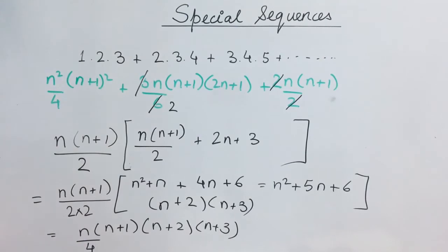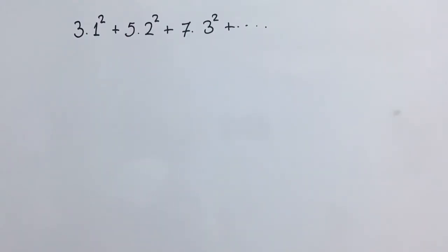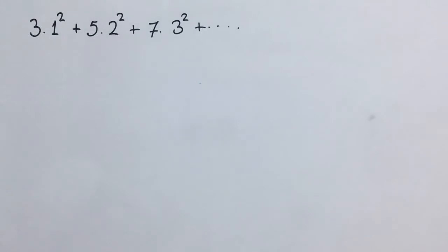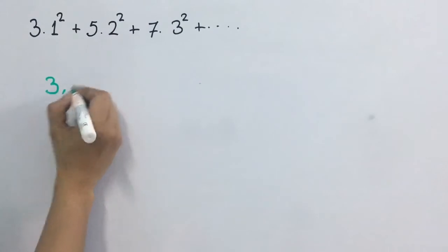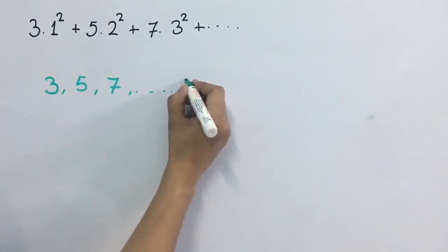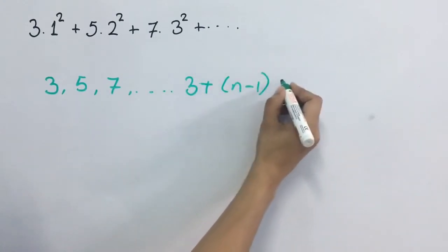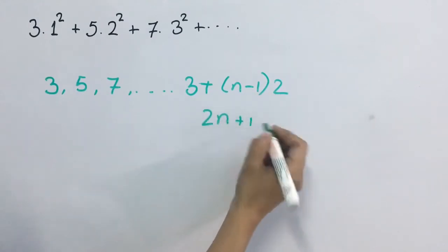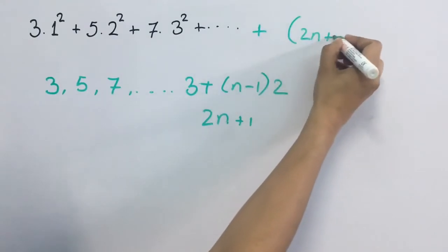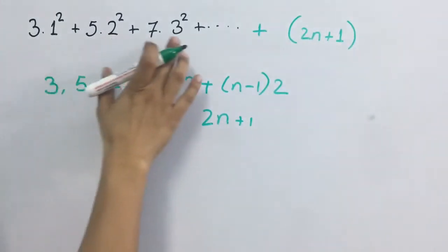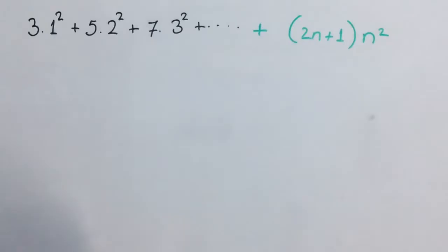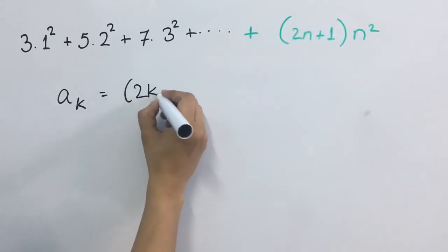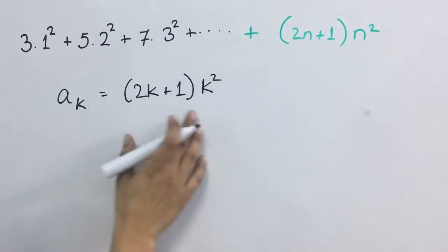Toh yeh jo humein series di gayi thi, iske first n terms ka jo sum hoga, this will be the value for it. Next series we will take: find the sum of n terms of the series 3·1² + 5·2² + 7·3² and likewise. Iska humein general term nikalna hai sabse pehle. Is series mein hum dekh sakte hain there are two parts. Pehla: 3, 5, 7 — iska general term kya hoga? a plus n minus 1 into d, that is 2; yeh ho jaega 2n minus 2 plus 3, that is 2n plus 1. Aur doosra: 1 square, 2 square, 3 square up till n square. So this is your general term: a_k will be 2k plus 1 into k square.